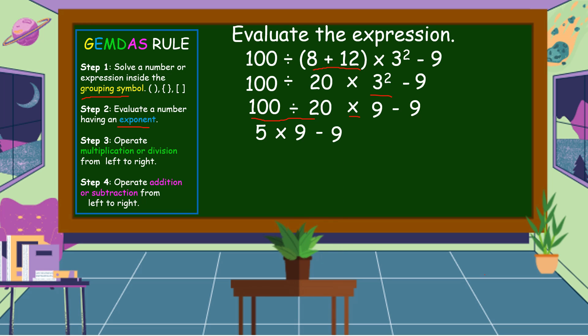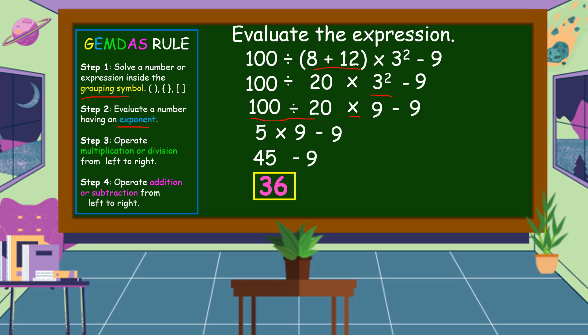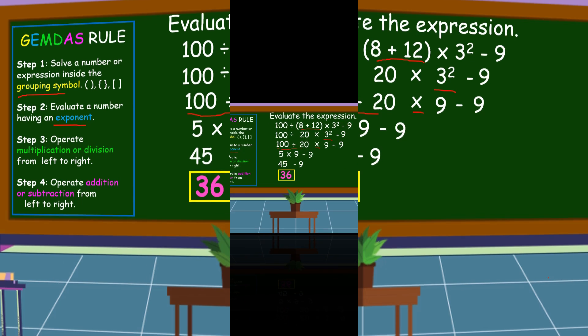Next, we're going to multiply — 5 times 9 is equal to 45 minus 9. Lastly, let's subtract — 45 minus 9 is equal to 36. And this is our final answer.